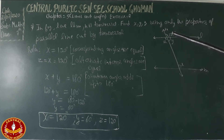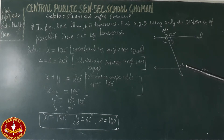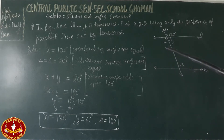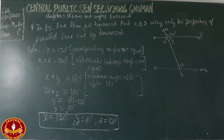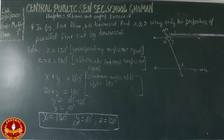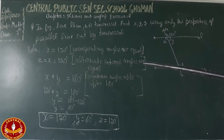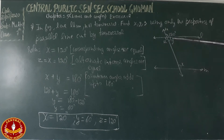The value of x is 120 degrees. Now, x and z are alternate interior angles — they are on opposite sides of the transversal between the parallel lines. Since alternate interior angles are equal, z is also equal to x, which is 120 degrees.